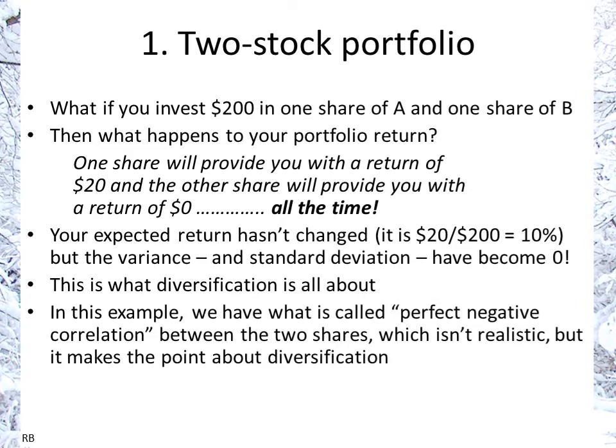That's the whole idea behind diversification. Here we have a perfect negative correlation between the two shares. Perfect negative correlation means when one goes up the other goes down. Perfect positive would be the opposite — when one goes up the other always goes up. And 'perfect' means it always happens. This is not a realistic scenario, but it gives you an idea of the point behind diversification.